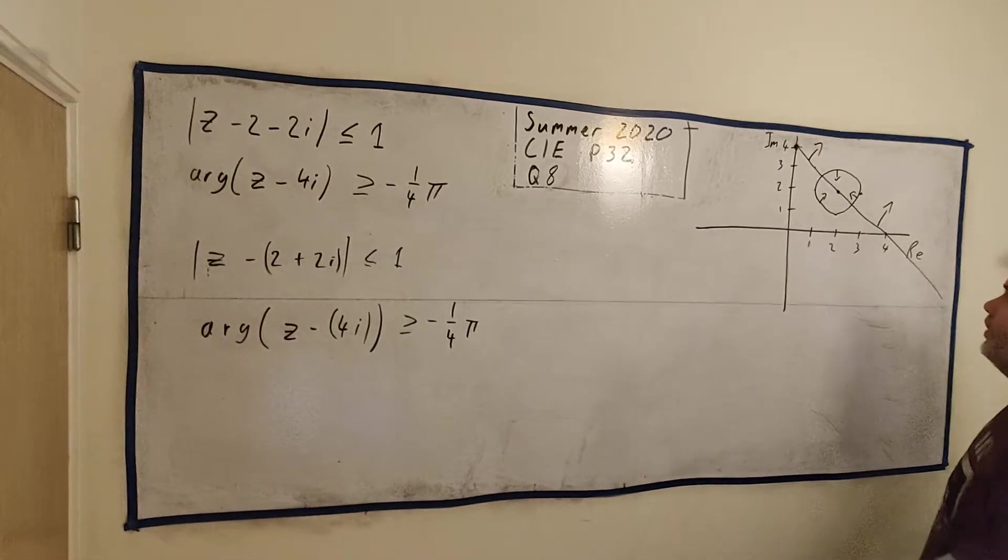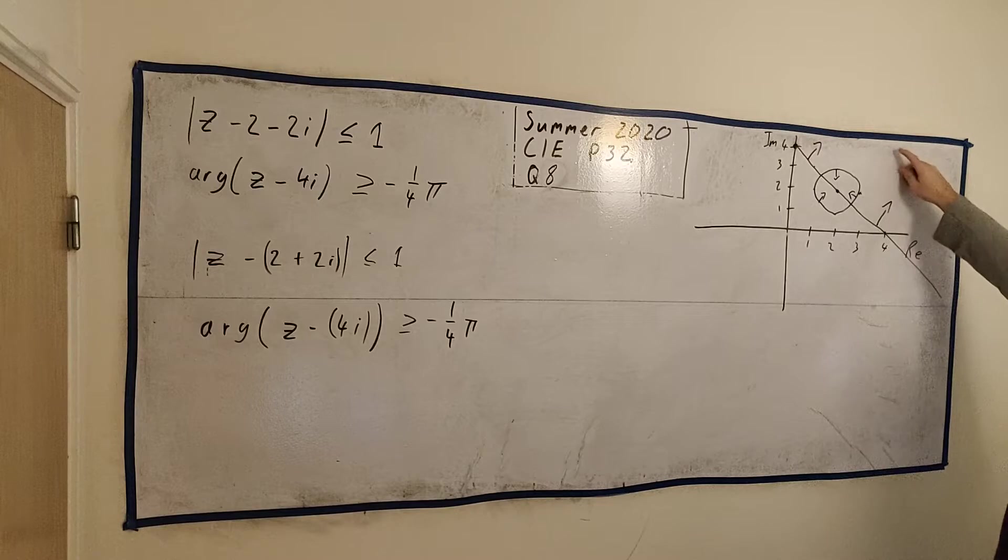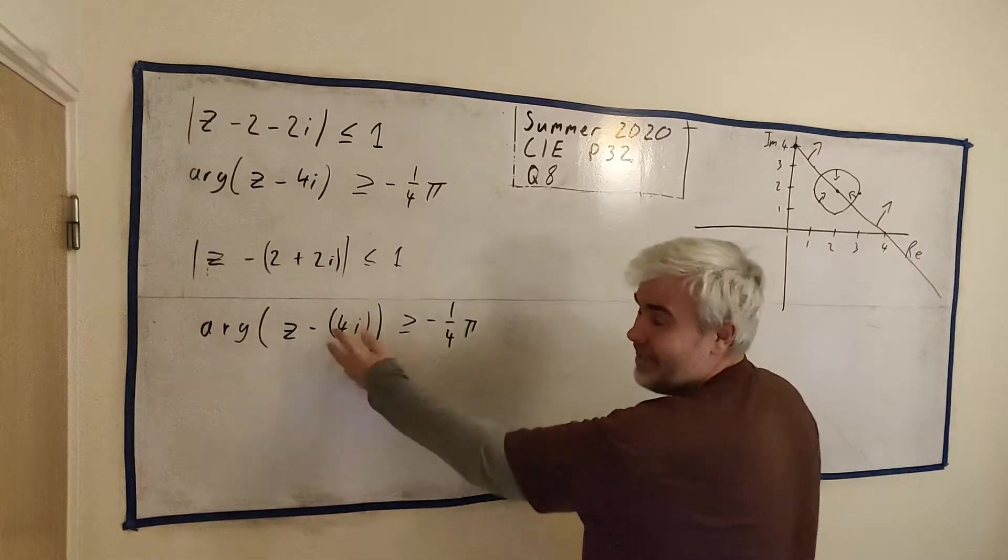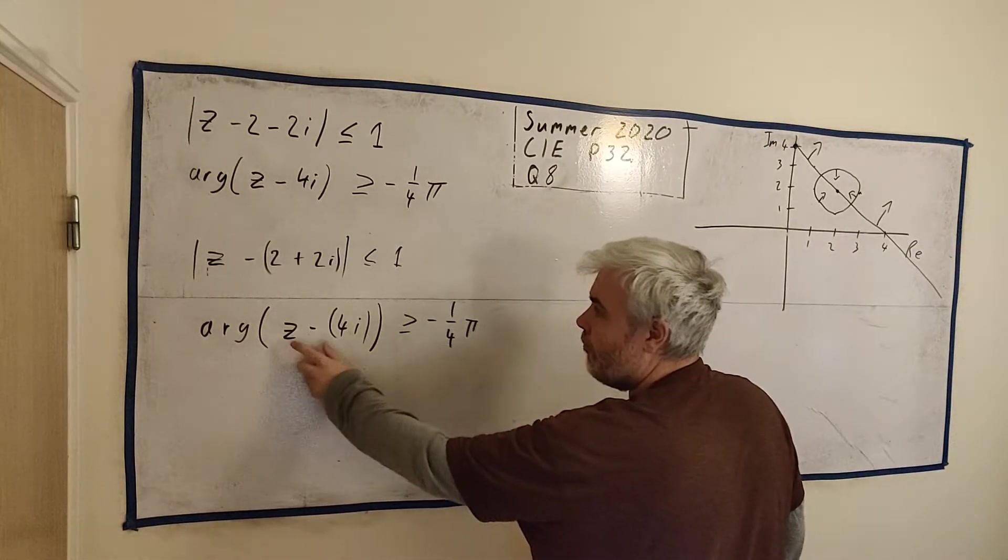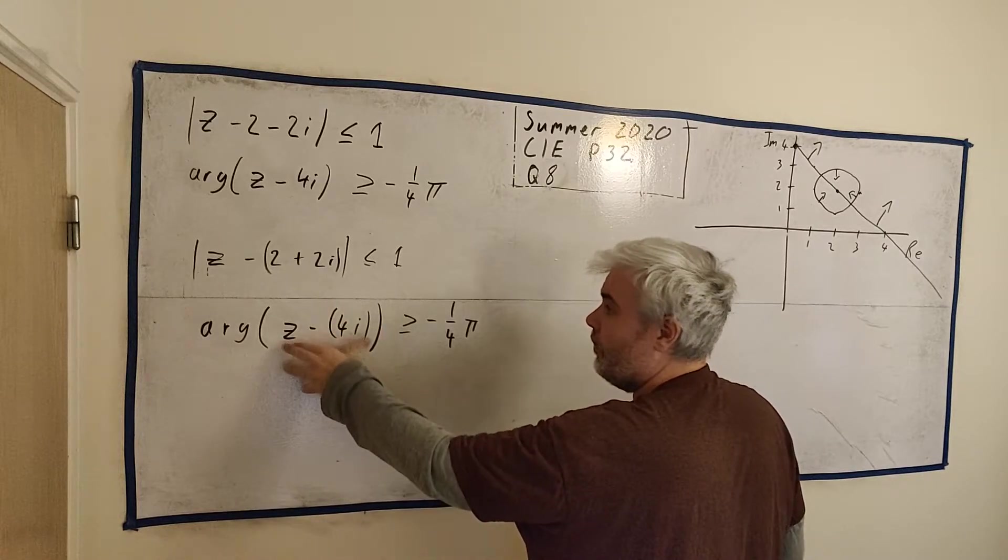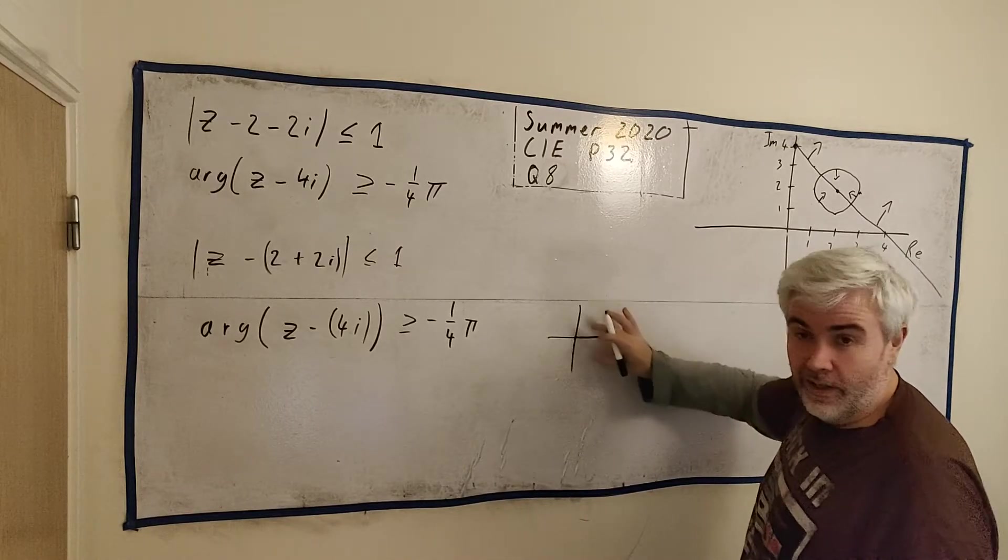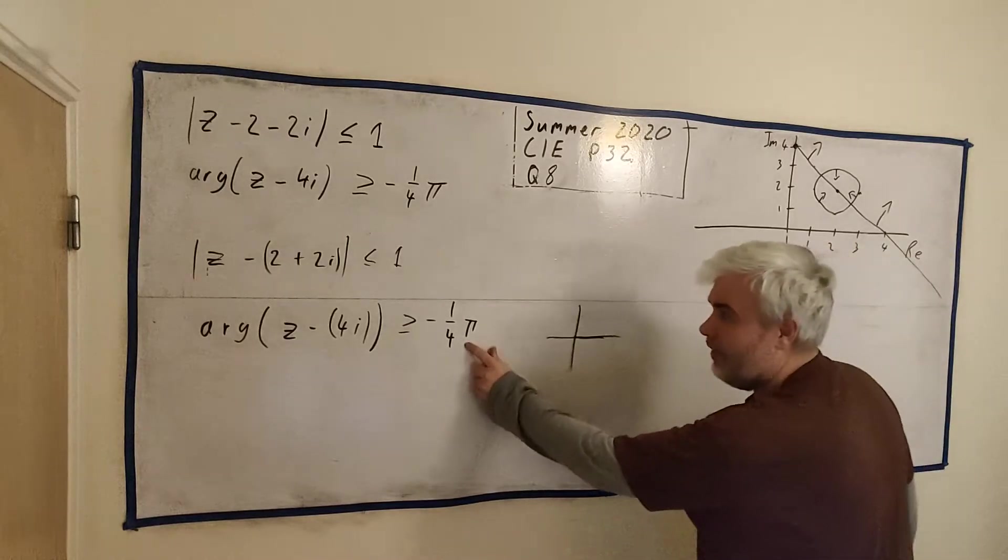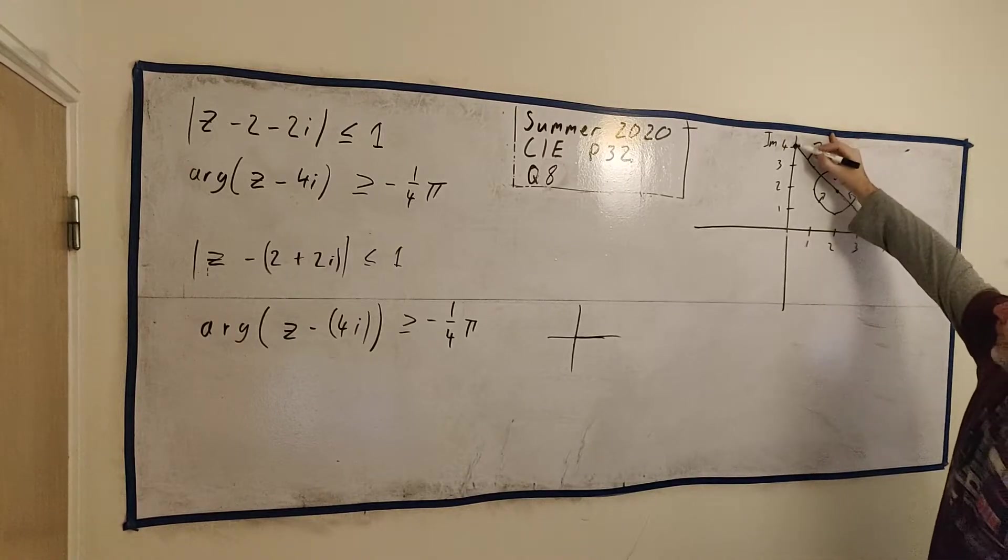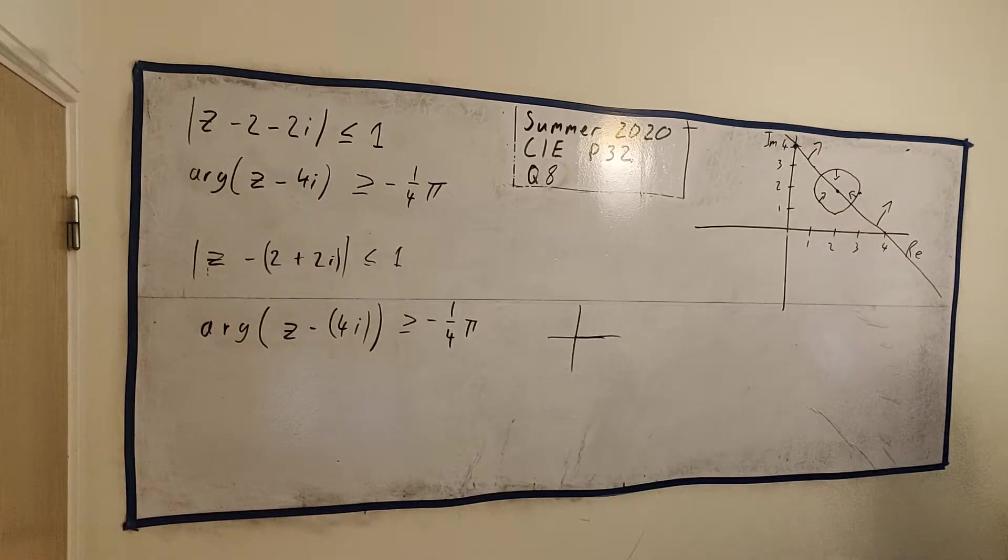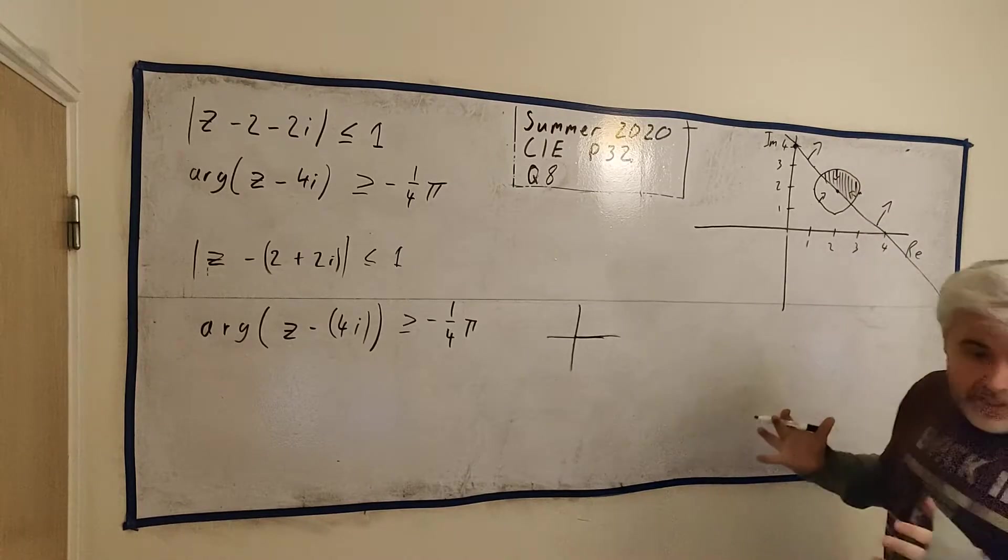That would go straight through 2,2 and it would hit 4,0. I'd get that line. And I know bigger than or equal to simply points up this way. Now we can test that. I'd pick 4 plus 4i. The argument of a real number is just 0 because it's straight along the axis. So is 0 bigger than minus pi over 4? It is. So this point is where we want. So that's the half of the plane we want. To answer this question, the answer is the shaded region right there. That's part 1 finished.